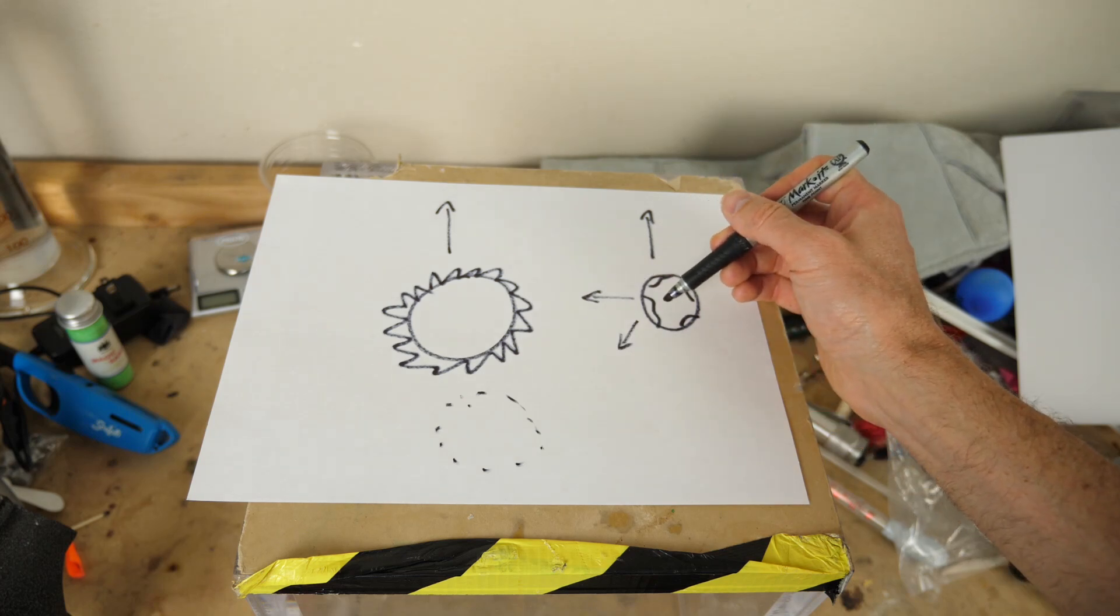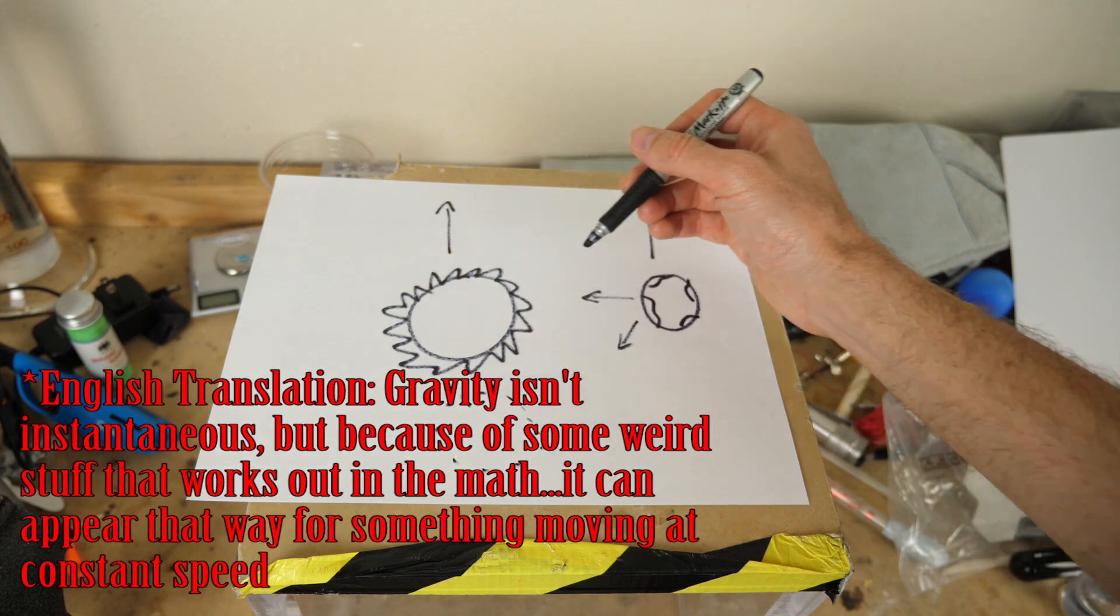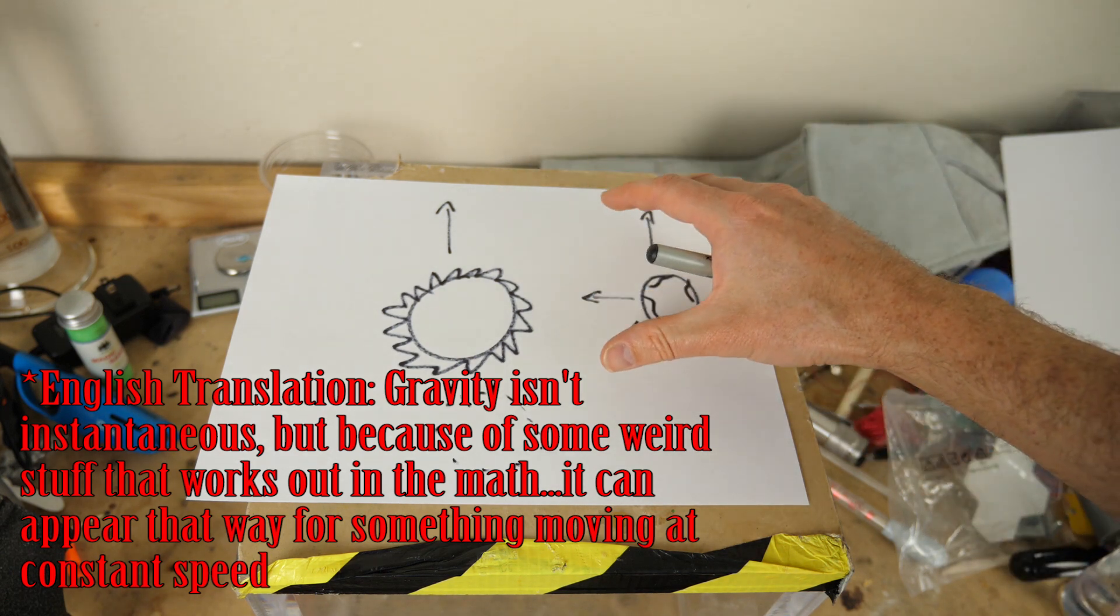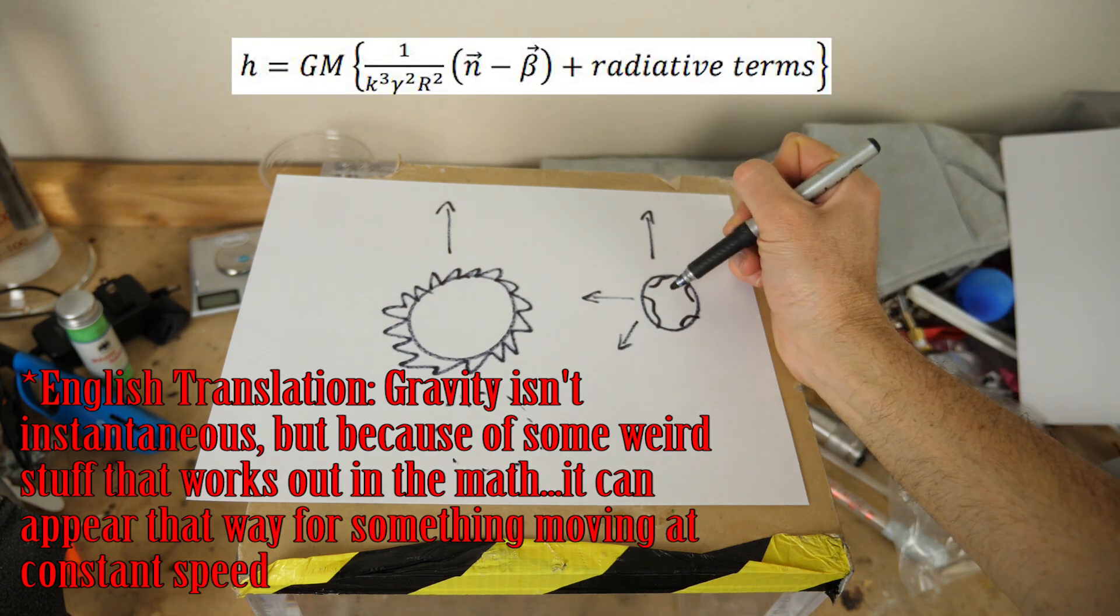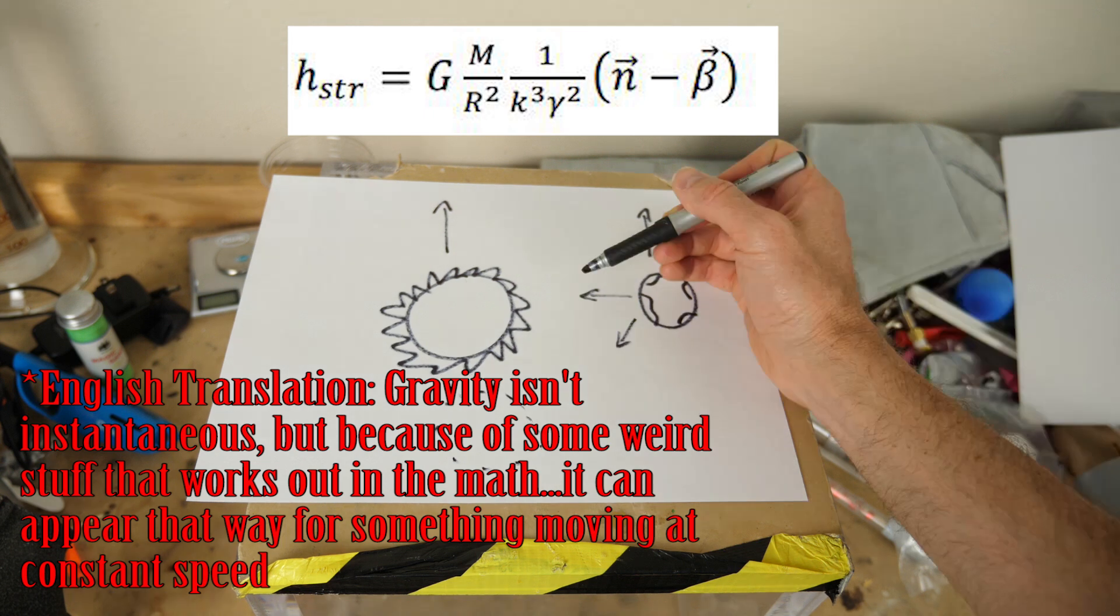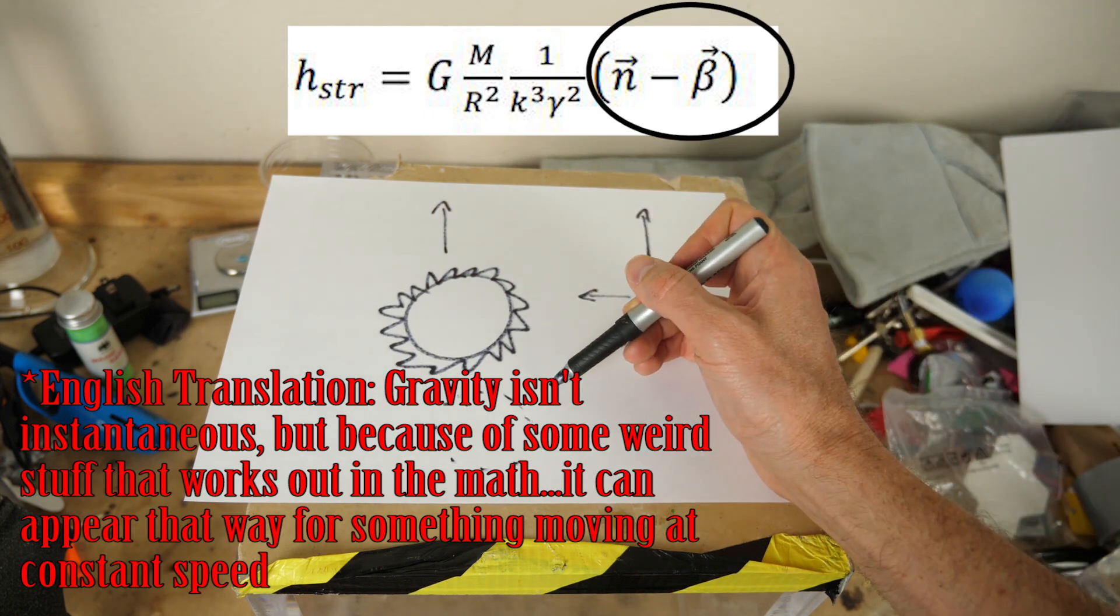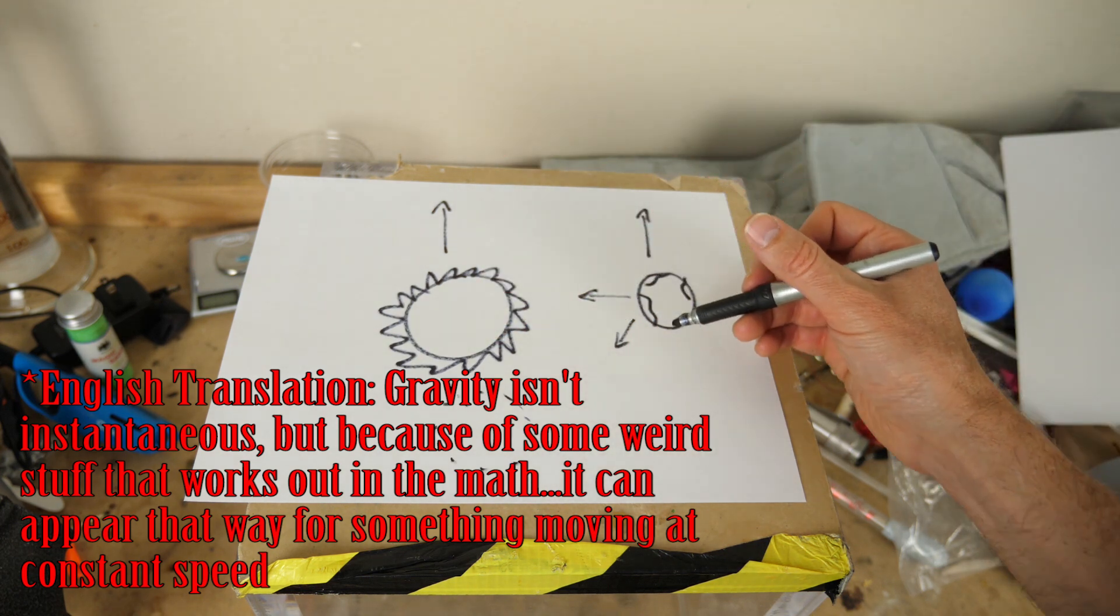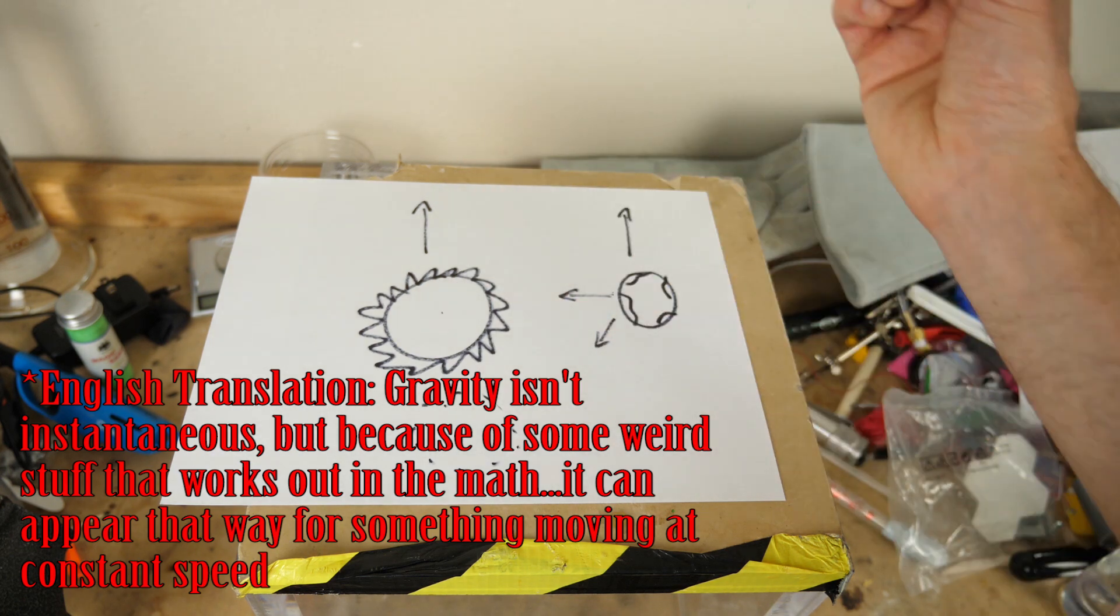But what happens is this change in direction of force would cause a total change in angular momentum of the system. And since angular momentum is always conserved, that would mean that there's some change in gravity radiating away from the system. But in general relativity, a mass moving at a constant velocity doesn't radiate. And what you find if you work through the general theory of relativity is that this effect is exactly cancelled by the movement of the sun and the earth. So that it seems like even though they're moving through space, the earth is still attracted to the instantaneous center of the sun.